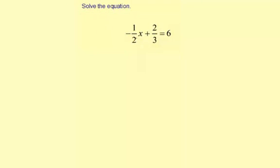Solve the equation: negative 1 half x plus 2 thirds equals 6. You can use a visual model to solve this, but it's a little cumbersome because you have uncommon denominators. I'm going to focus on the algebra process here, which is just working with the actual numbers and variable.